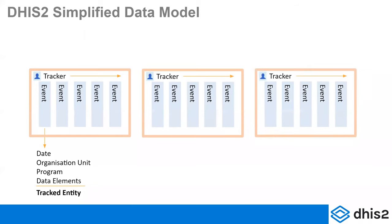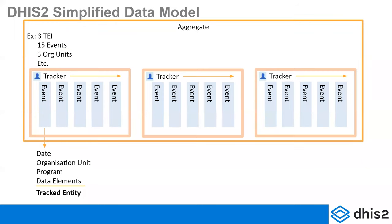You can have a series of tracked entities — people, lab samples, trees, or whatever you're tracking. Every time something occurs with that tracked entity, it would be registered as an event within the tracked entity in the context of a program, in an organization unit, at a certain date. All of this information can be aggregated. You can wrap that information into program indicators or other ways of aggregating data upwards, so you can still have all of the aggregate outcomes you're used to getting through standard DHIS2 HMIS reporting, while also having the granularity to go down to individual events or the individual tracked entity.